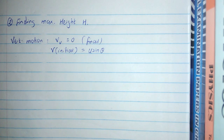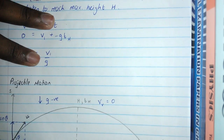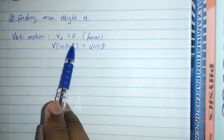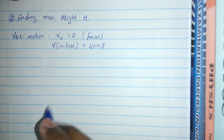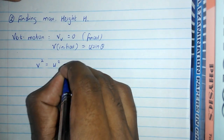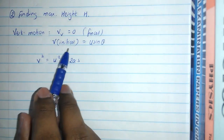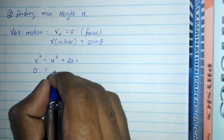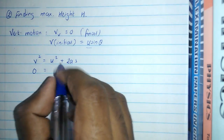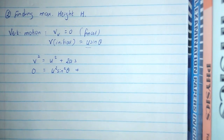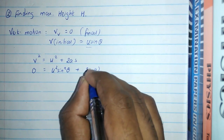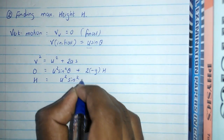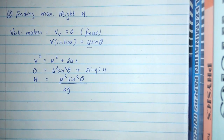Now we find the maximum height H reached by the object. Again considering vertical motion, at maximum height the final vertical component is zero and the initial vertical component is u sinθ. We use v² = u² + 2as. Substituting: 0 = u² sin²θ + 2(−g)H. Rearranging gives H = u² sin²θ / (2g).